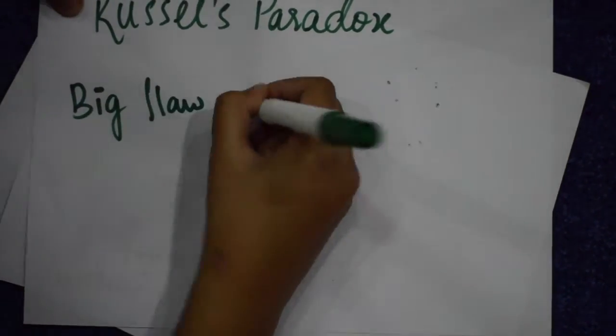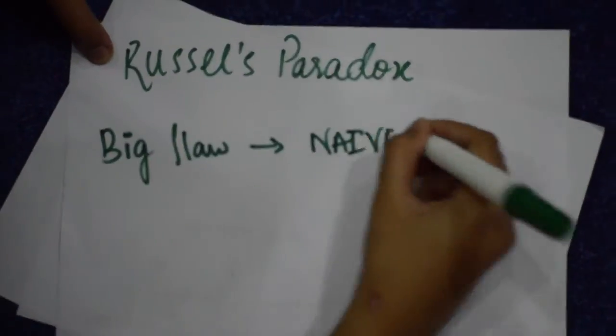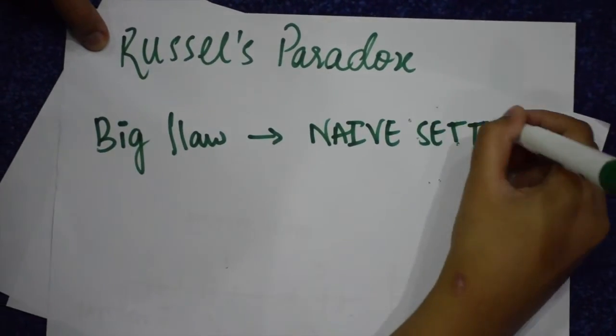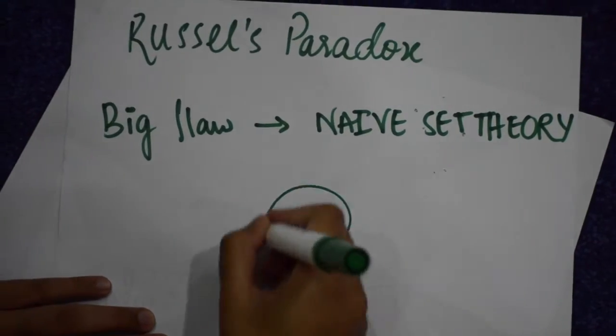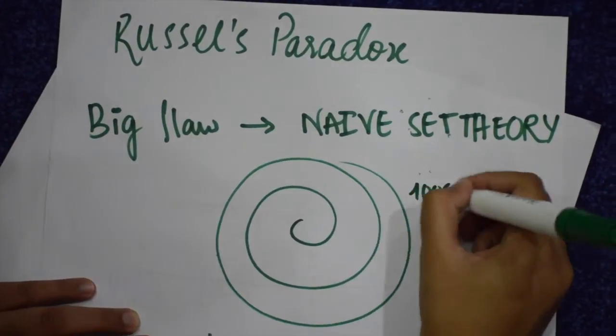This showed us a big flaw in the already used set theory, the naive set theory. To understand the naive set theory, let's go back a few hundred or thousand years.